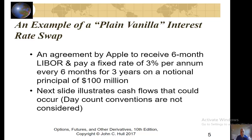An example of a plain vanilla interest rate swap would be an agreement by Apple to receive six-month LIBOR — or today possibly SOFR — and pay a fixed rate of 3% per annum every six months for three years on a notional principal of $100 million.